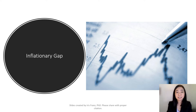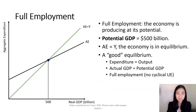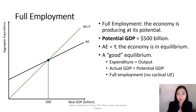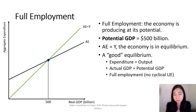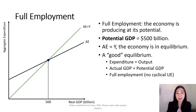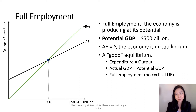Next, I'm going to talk about an inflationary gap. We start with our economy operating at its potential GDP. So suppose the potential GDP is $500 billion, and our aggregate expenditure is equal to our output, meaning our economy is in equilibrium. This is a good equilibrium because our actual GDP is equal to potential GDP, meaning we have full employment and there is no cyclical unemployment.